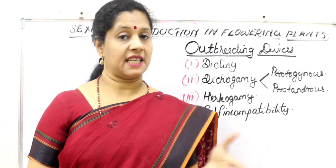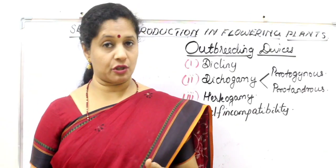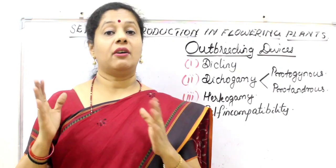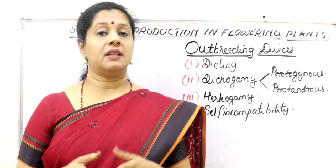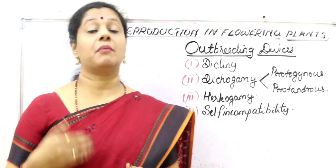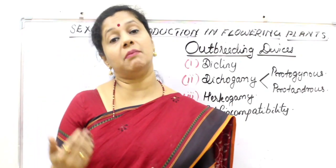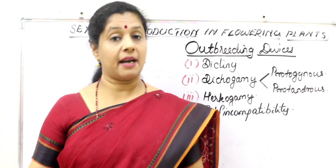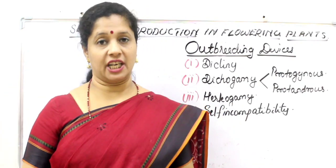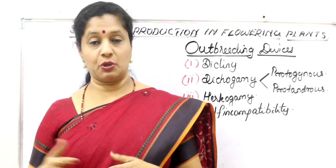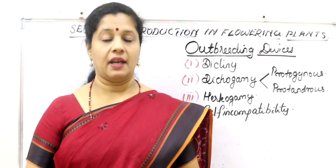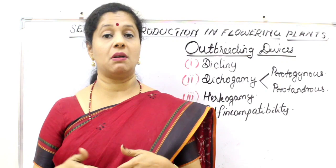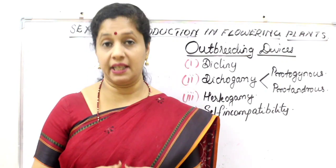Flowering plants can have self-pollination or cross-pollination, but which is better? Cross-pollination is preferred by plants because it brings in more variations. Variations allow better adaptation to a changing environment and the possibility of evolution. Continuous self-pollination leads to a problem called inbreeding depression.